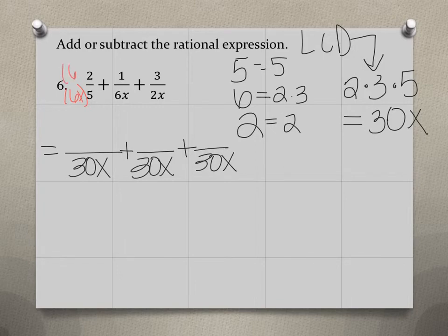So we're going to multiply the top and bottom by 6x. So 6x times 2 is 12x. Then 6x times 5 equals 30x.